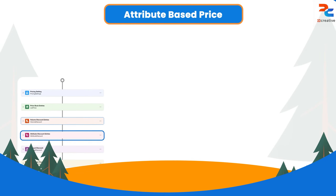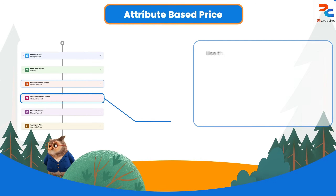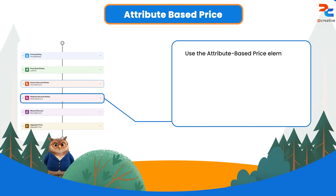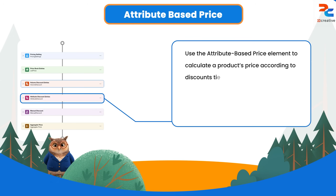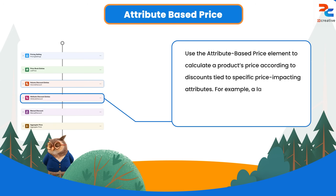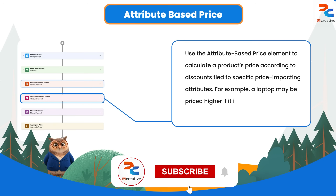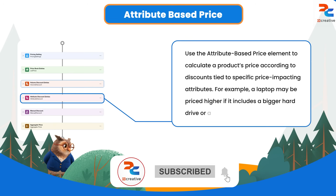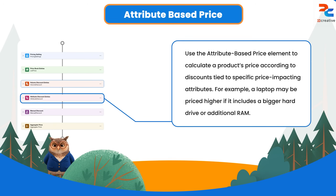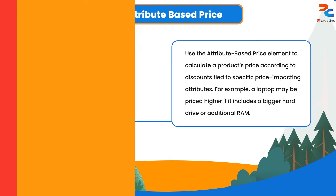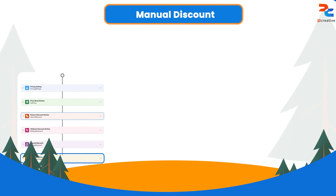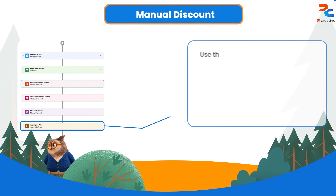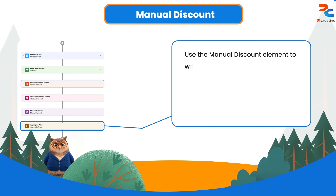Then we have the attribute-based price element, which calculates the price of a product based on discounts set for certain price-impacting attributes. For example, a laptop might cost more with a larger hard drive or more memory. We'll discuss this further in the attribute-based price section.